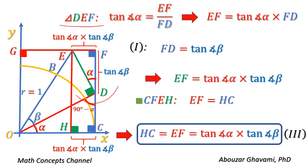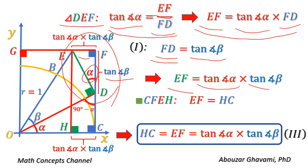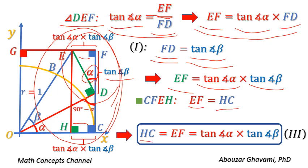In right triangle DEF, tangent of angle alpha equals the length of front side EF divided by the length of adjacent side FD. Multiplying both sides by FD, we get EF equals tangent of angle alpha times FD. Substituting FD equals tangent of angle beta, we have EF equals tangent of angle alpha times tangent of angle beta. In rectangle CFEH, side EF equals side HC. Therefore, HC equals tangent of angle alpha times tangent of angle beta.